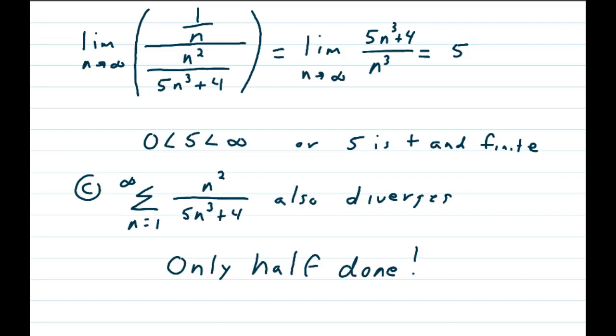But remember, we are only half done. We have found out that the positive series diverges. We now need to look at the alternating series.